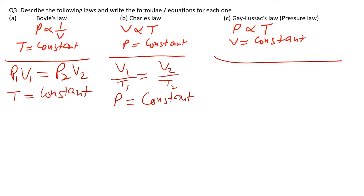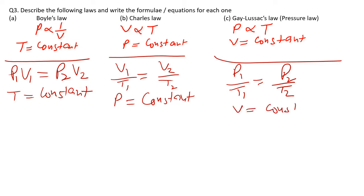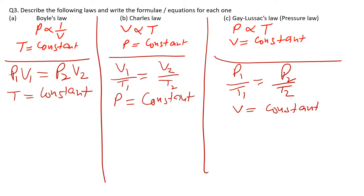For Gay-Lussac's Law, the formula is P₁/T₁ = P₂/T₂, and the condition is that the volume of the gas must be constant. These are the formulas for the three gas laws.